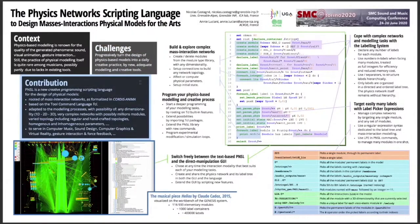Our paper introduces the Physics Networks Scripting Language (PNSL), which enables scripting the design of physical models for sound and music computing, but also visual animation and VR, gesture interaction with haptics, and others. On the side of the core physics-based system, PNSL routes on masses-interactions networks, as defined in the CORDIS-ANIMA formalism. On the side of the programming languages, it builds over the Tool Command Language, TCL.